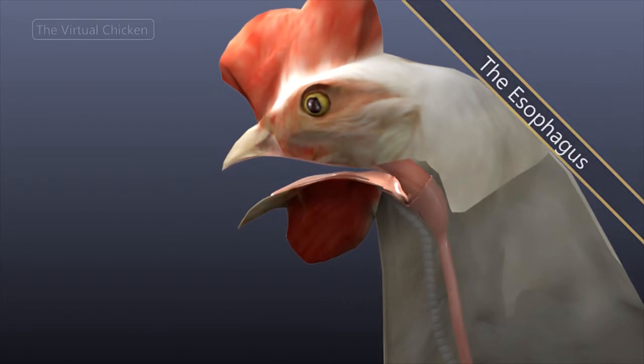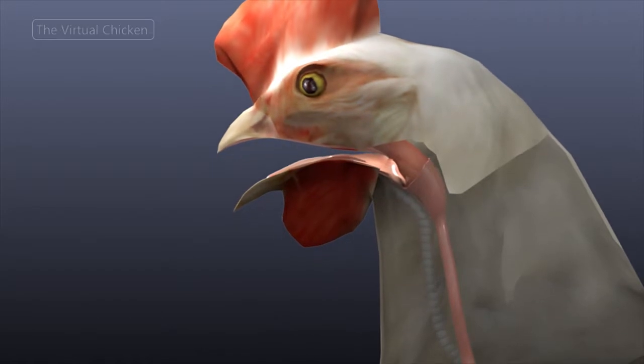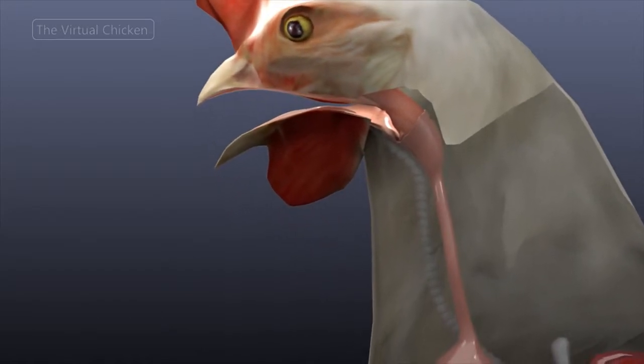The esophagus of a chicken is a thin-walled, expansive tube that transports food from the mouth of the pharynx to the stomach.